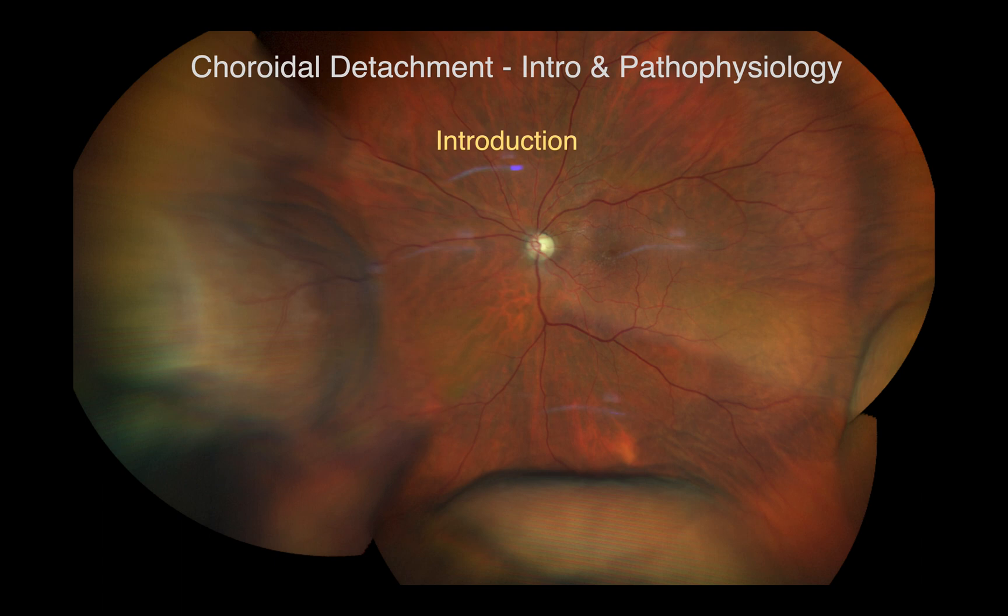Choroidal detachments are known by several terms within the literature, including choroidal effusion, uveal effusion, cilio-choroidal detachment and cilio-choroidal effusion. However, they all refer to the same condition.